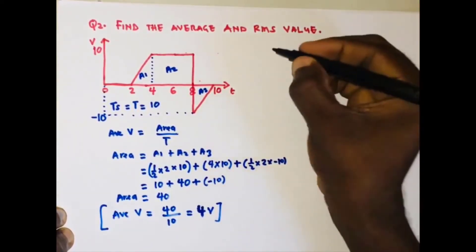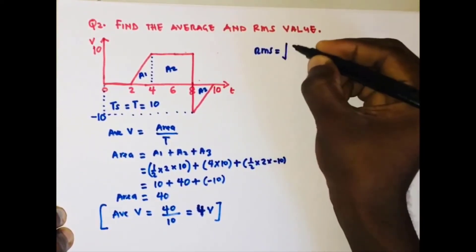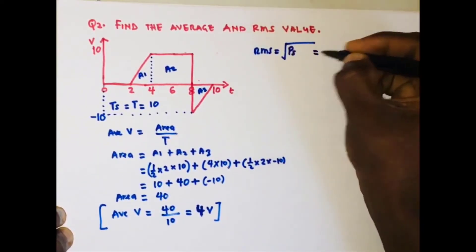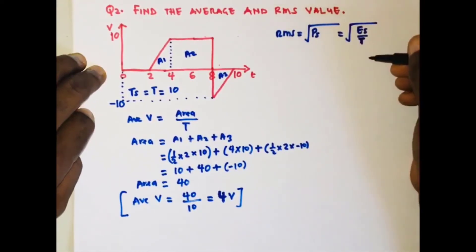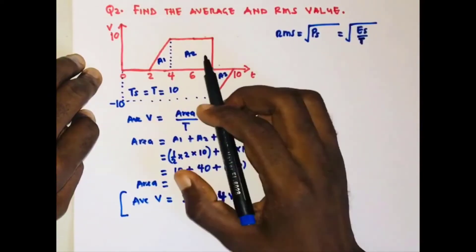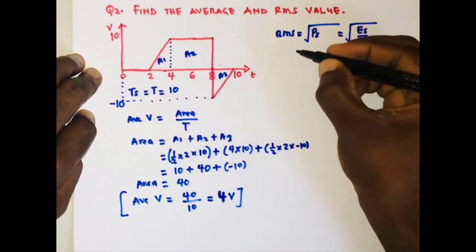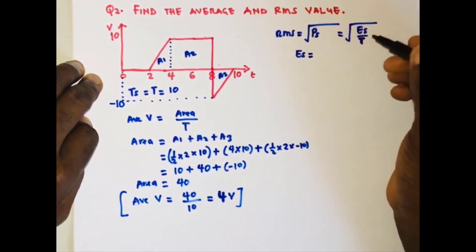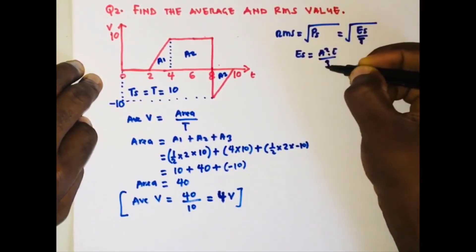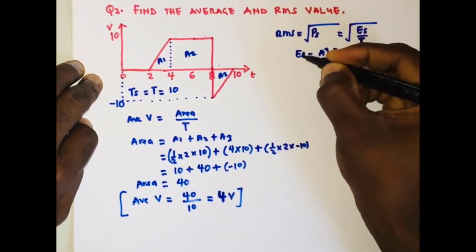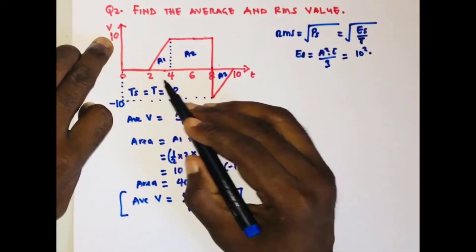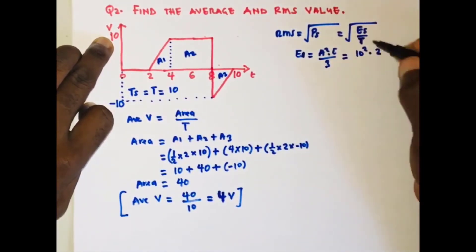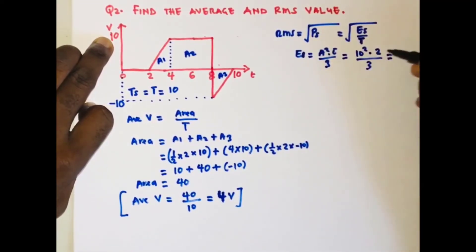Now let's find the RMS value. The RMS equals the square root of energy divided by the period T. We have a triangle, a rectangle, and a triangle. The energy of a triangular waveform is amplitude squared times period divided by 3. So E1 equals 10 squared times 2, divided by 3, which is 100 times 2 divided by 3, giving 200 over 3.